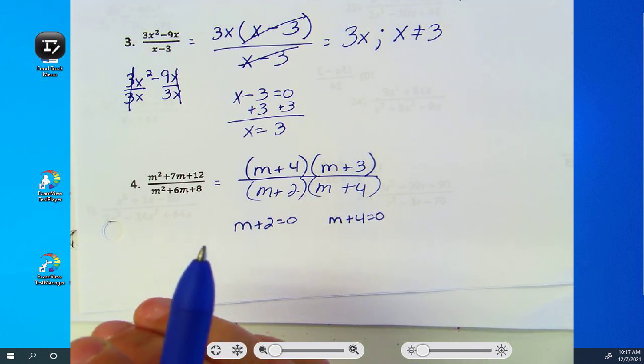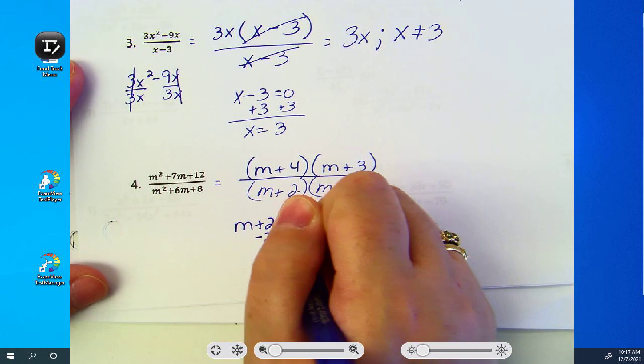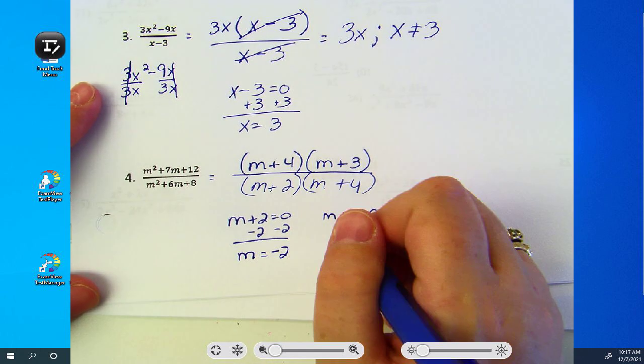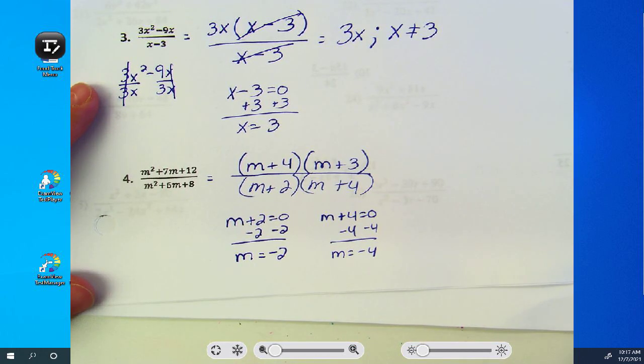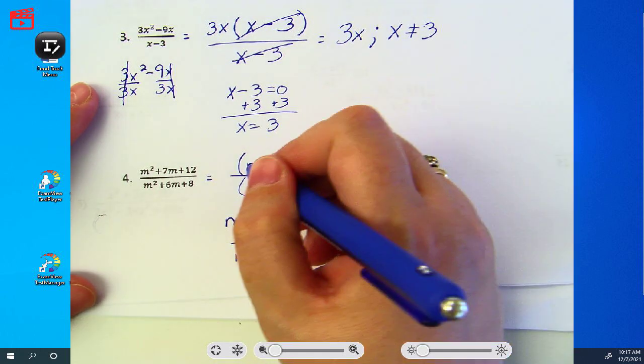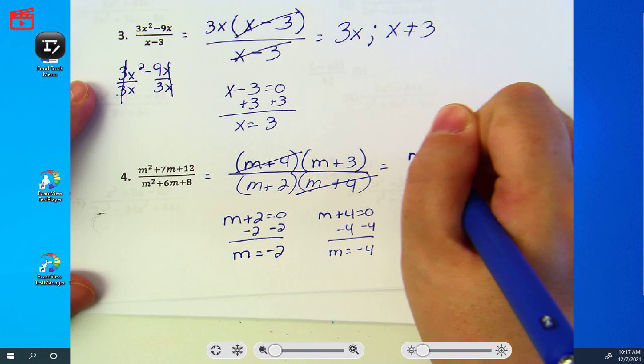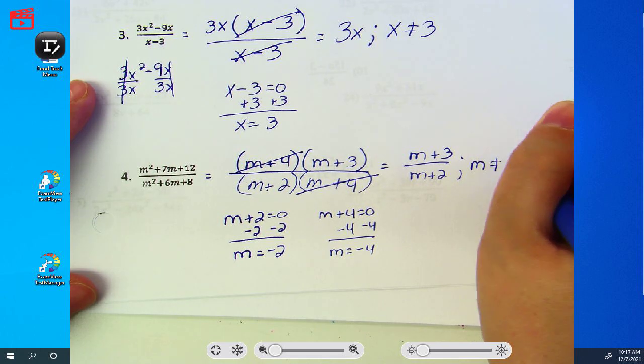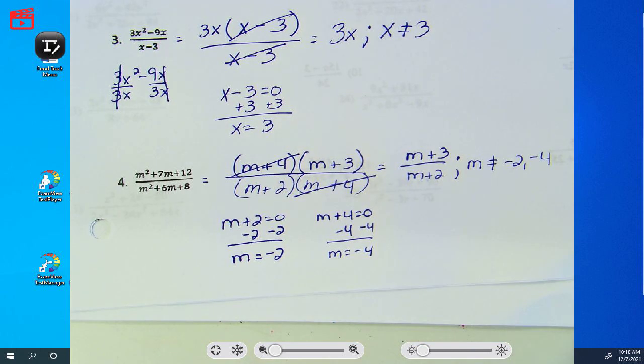Subtract two. M equals negative two. Subtract four. M equals negative four. Cancel out what's in common. You'll have m plus three over m plus two. M does not equal negative two or negative four.